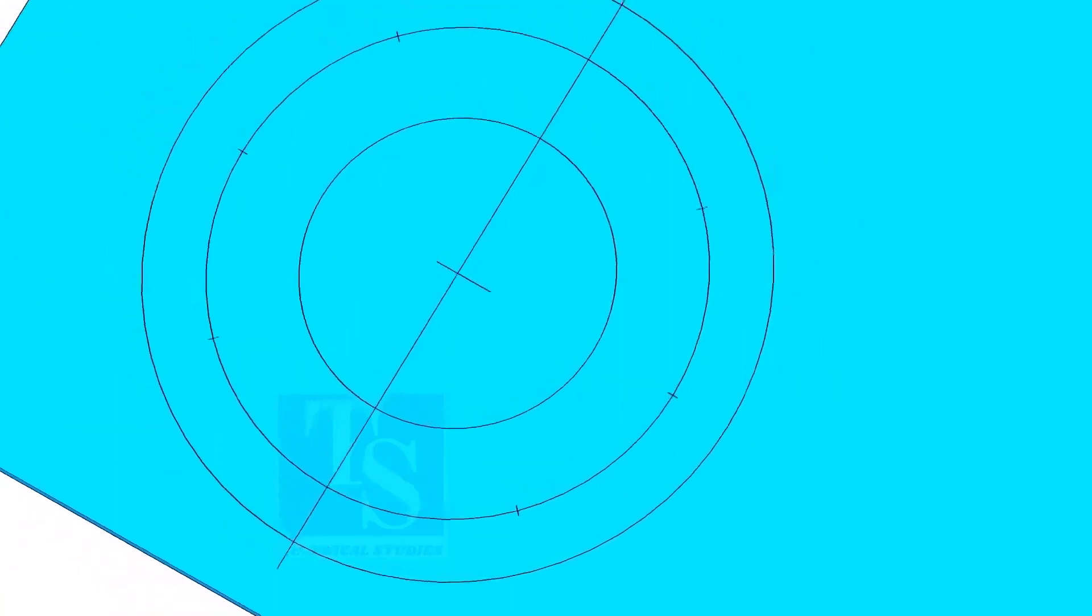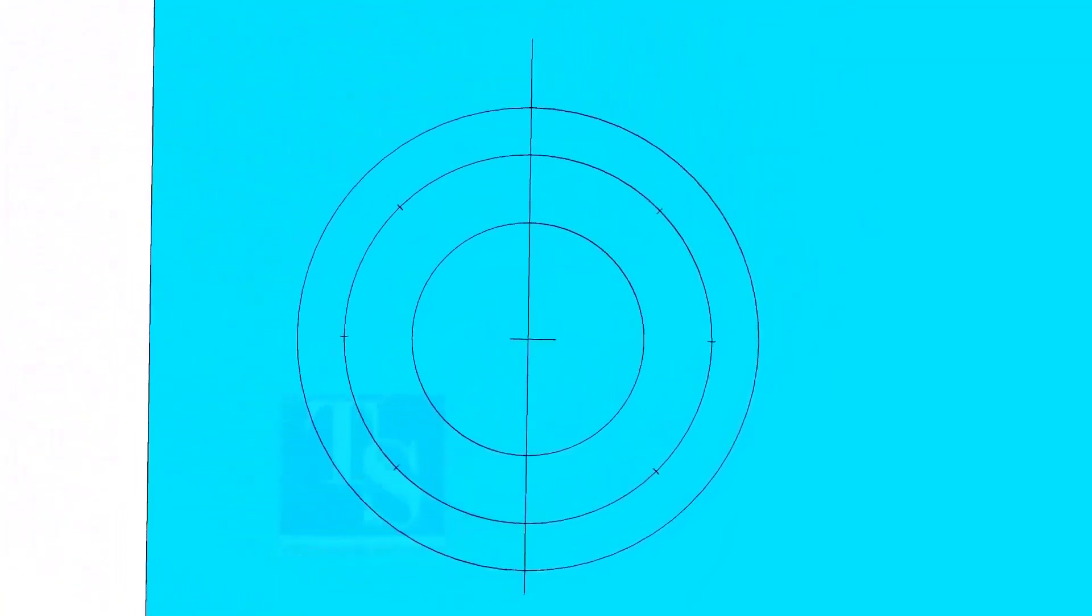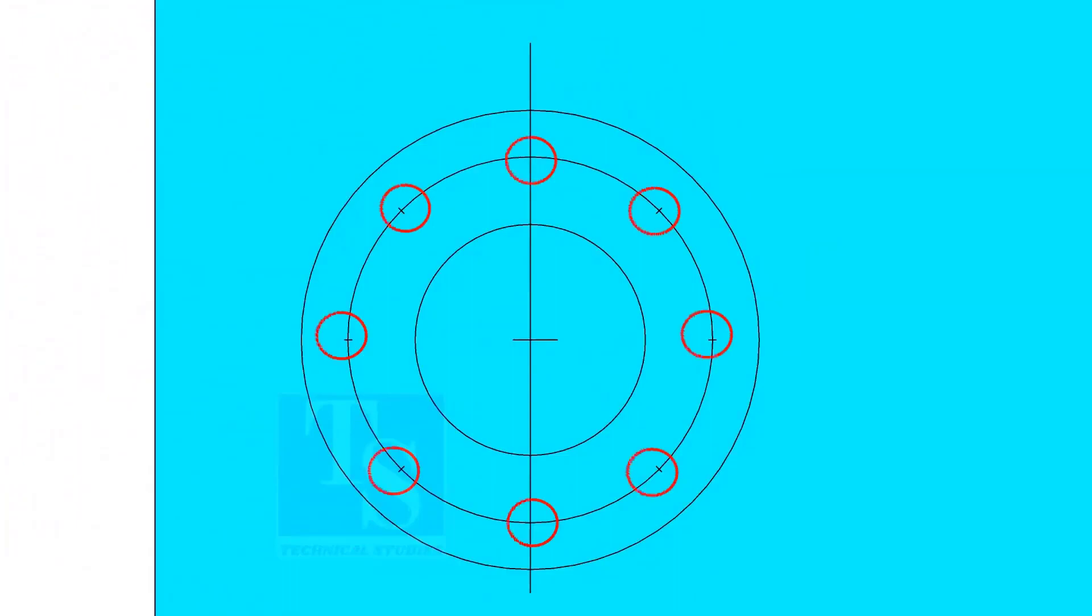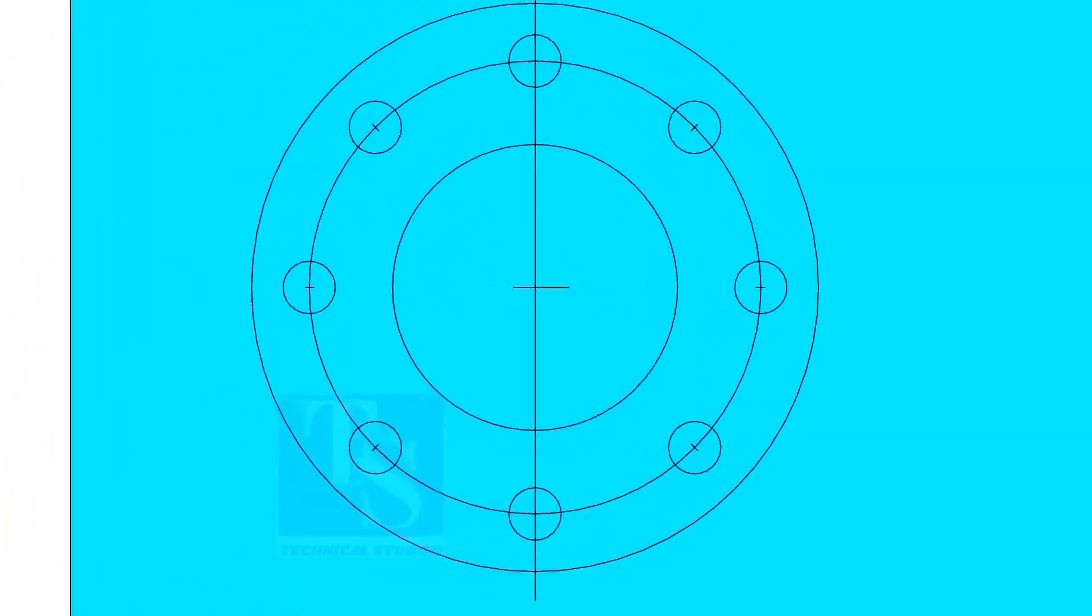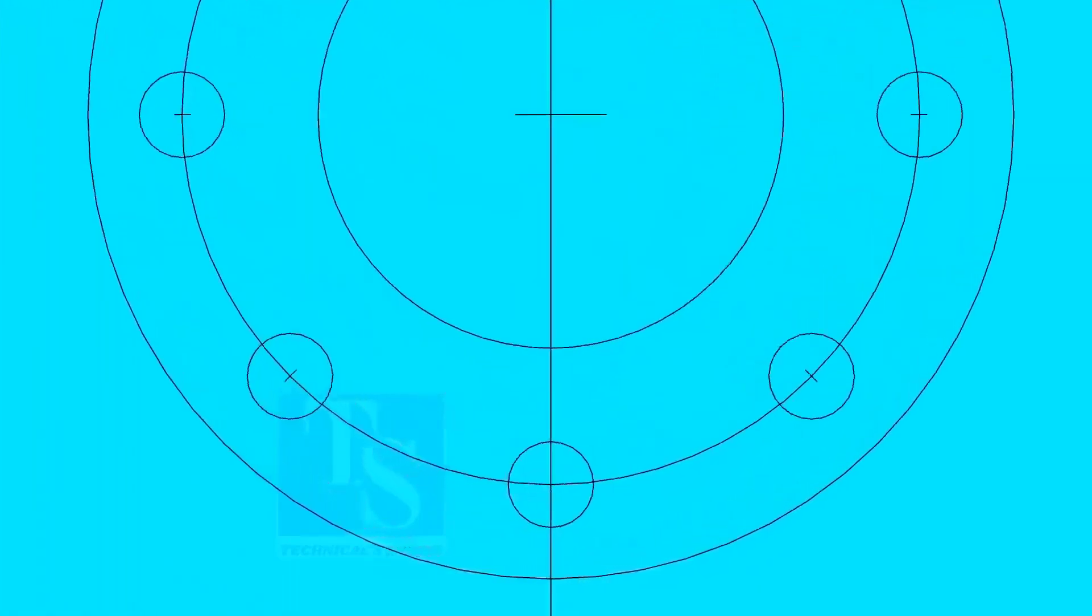Punch mark all the 8 divisions and draw circles of the diameter of the bolt holes if you are drilling the holes with a normal drill bit. Thank you for watching.